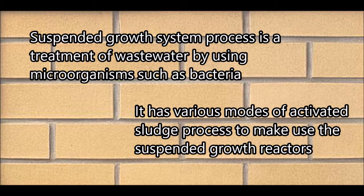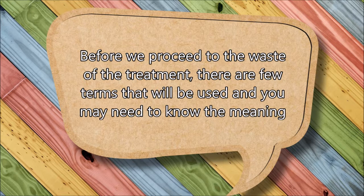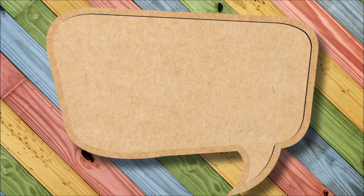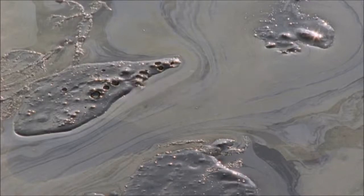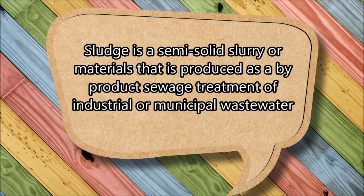Before we proceed to the ways of treatment, there are a few terms you may need to know. The first term is sludge. Sludge is a semi-solid slurry or material that is produced as a by-product of waste treatments of industrial or municipal wastewater.